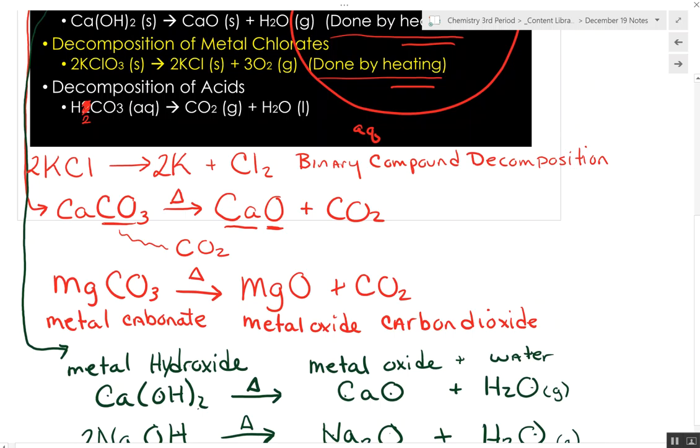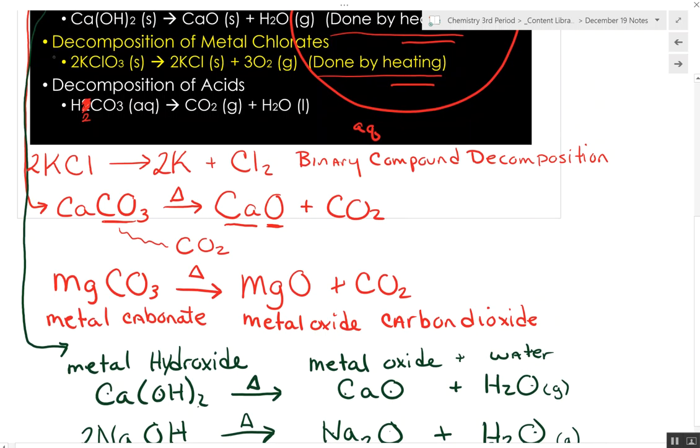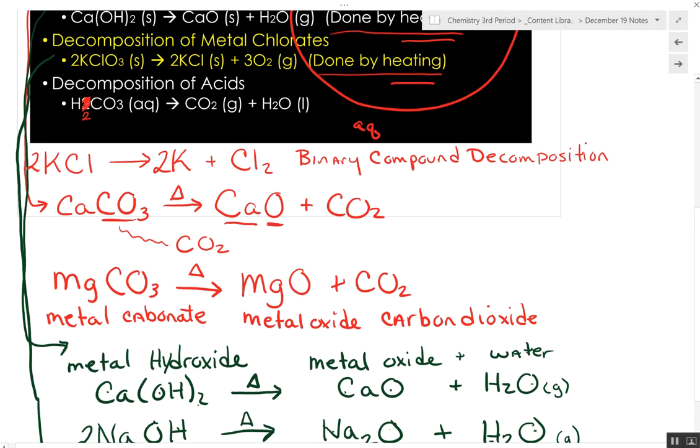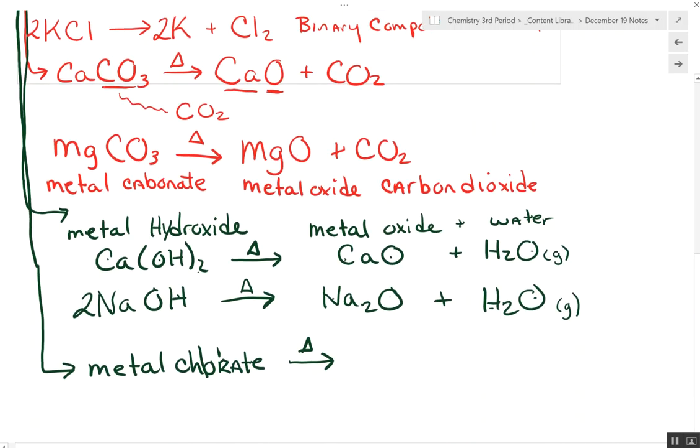The next decomposition is of metal chlorates. So I will bring that down a little farther here. We start with a metal chlorate and we heat that up. We end up with a chloride and burn off oxygen. So we end up with a metal chloride. Remember, -ide tells you it's binary. And oxygen gas.